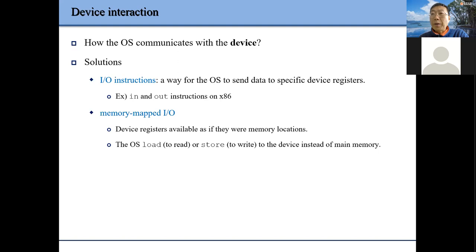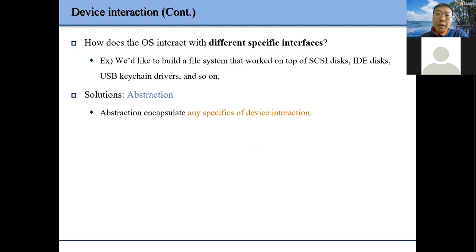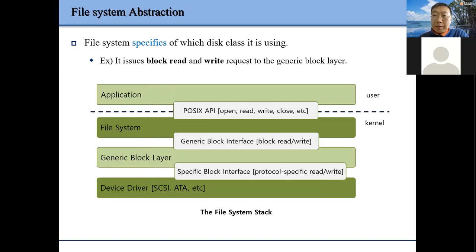IO instruction may be a little bit more efficient, but it adds complexity in hardware design, so memory-mapped IO has now become the most popular one. Then we talked about this abstraction: when we design a device driver, we have several layers of abstraction starting from the file system — we provide open, read, write prototypes — then going to the generic block layer, then to the device driver low-level layer.